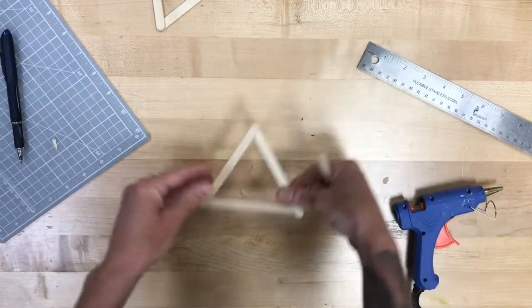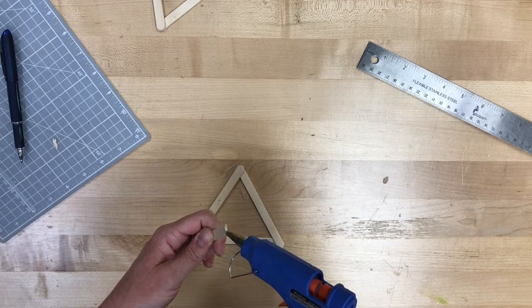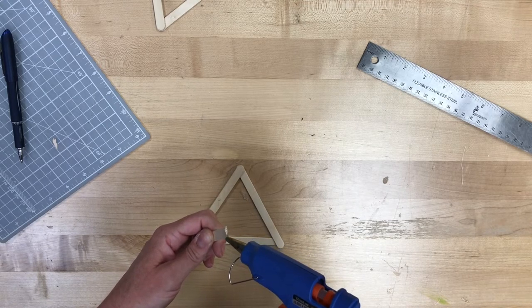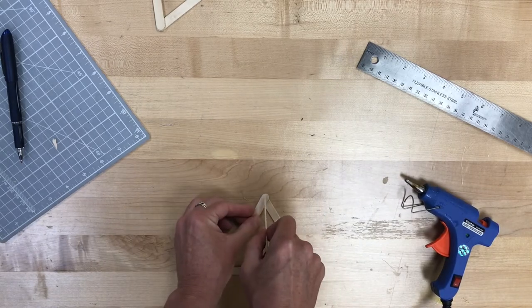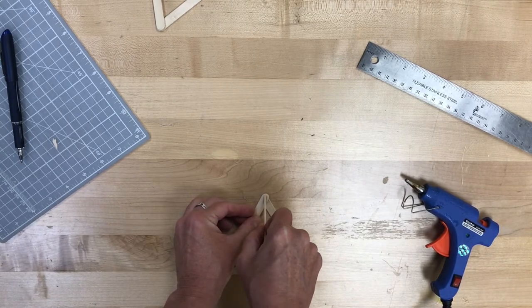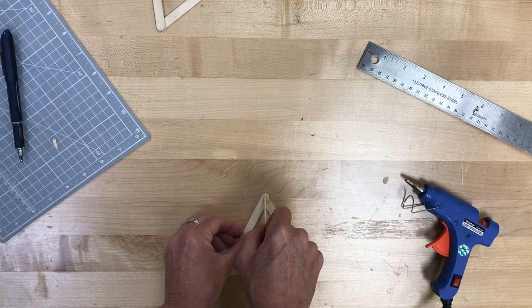Then for my next stick I'm going to take the second triangle and I'm going to use hot glue and I'm going to have this one sticking up from one of the corners. We'll hold that one in place for just a little bit too to make sure that it is solidly on there.